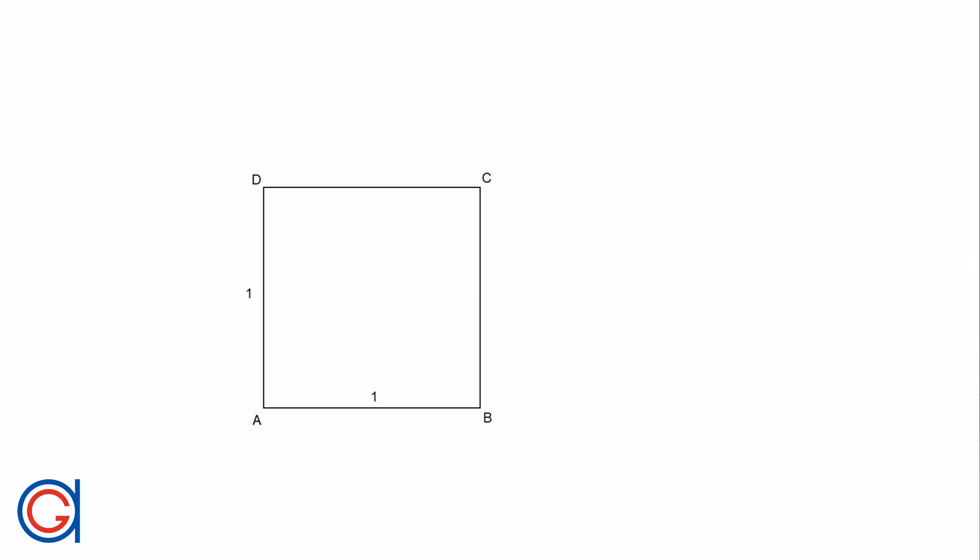The root 2 rectangle is constructed by extending two opposite sides of a square to the length of the square's diagonal. The root 3 rectangle is constructed by extending the two longer sides of the root 2 rectangle to the length of the root 2 rectangle's diagonal. Each successive root rectangle is produced by extending a root rectangle's longer sides to equal the length of its rectangle's diagonal.